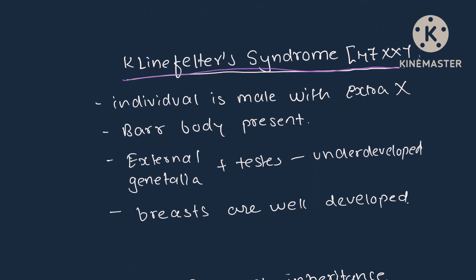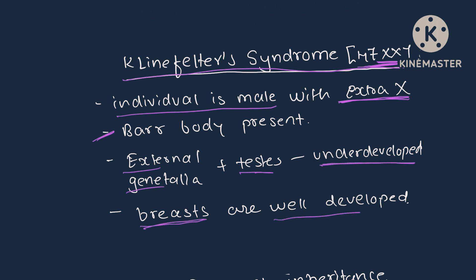In Klinefelter syndrome, the genotype is 47 XXY. The individual is male with an extra X chromosome. Bar body is present due to the presence of 2 X chromosomes. External genitals and testes are underdeveloped while breasts are well developed.